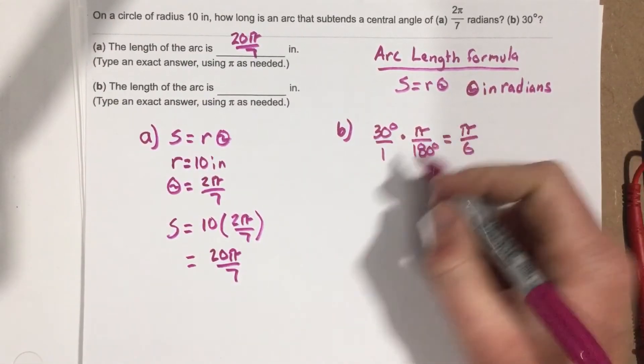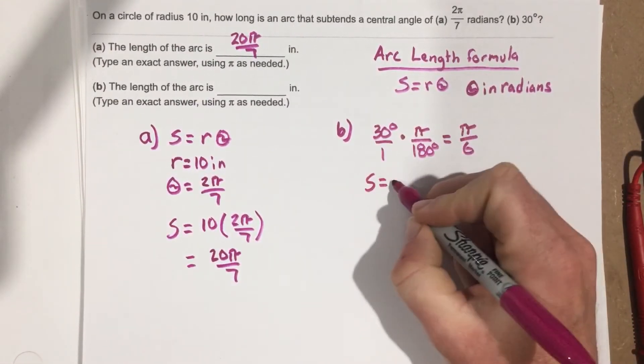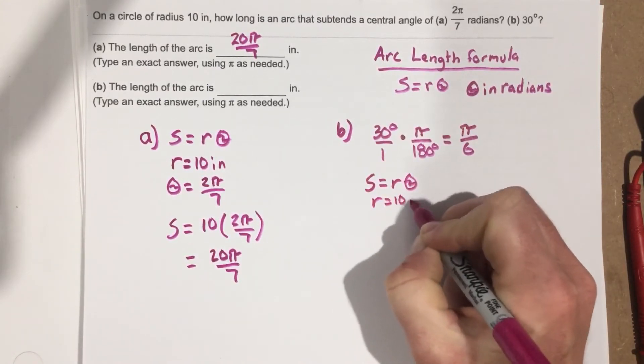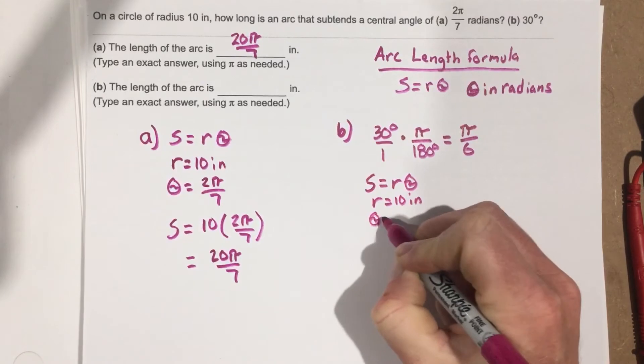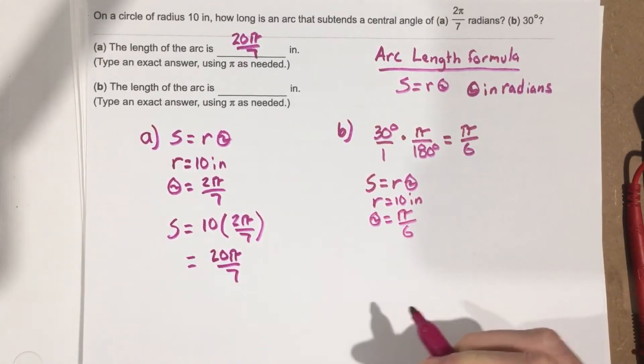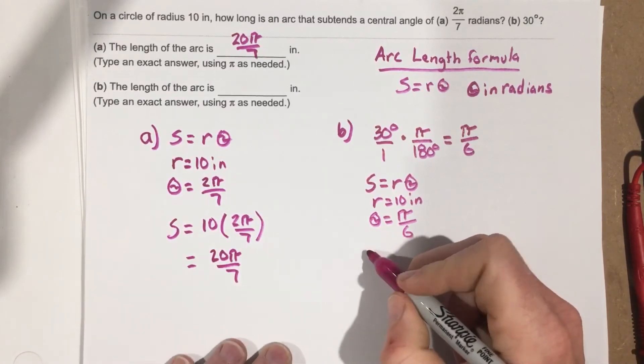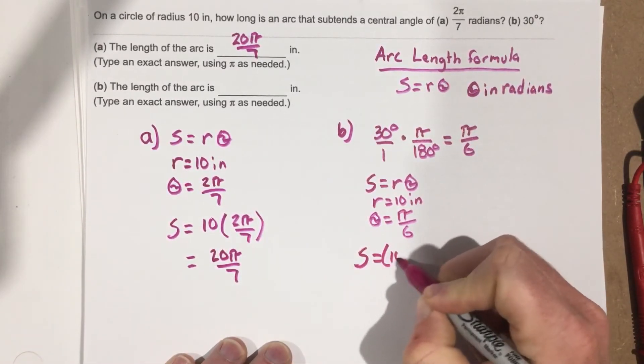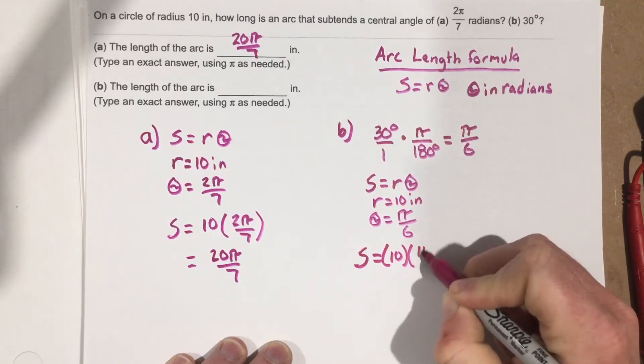So now we can use π over 6 and say S equals R theta, where R is the 10 inches, and theta is π over 6.